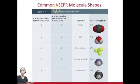These are the common VSEPR three-dimensional molecule shapes, and they have both names - linear, bent, trigonal planar, trigonal pyramid, and tetrahedral - and also the three-dimensional shapes.